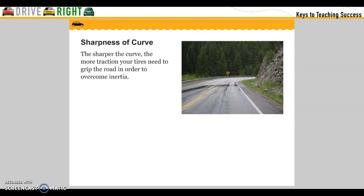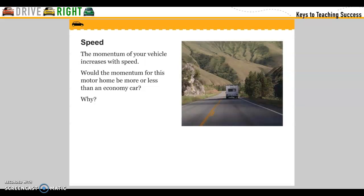The sharper the curve, the more traction your tires need to grip the road in order to overcome inertia. The momentum of your vehicle increases with speed. Would the momentum for a motor home be more or less than an economy car? Why?